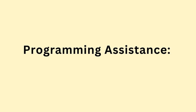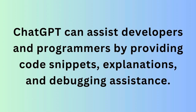Next is as a Programming Assistant. ChatGPT can assist developers and programmers by providing code snippets, explanations, and debugging assistance. This can be particularly useful for those learning to code or facing challenges in their programming tasks. For example, if you encounter an error while coding, you can describe the issue to ChatGPT and it can provide suggestions for fixing the problem or offer guidance on coding best practices.